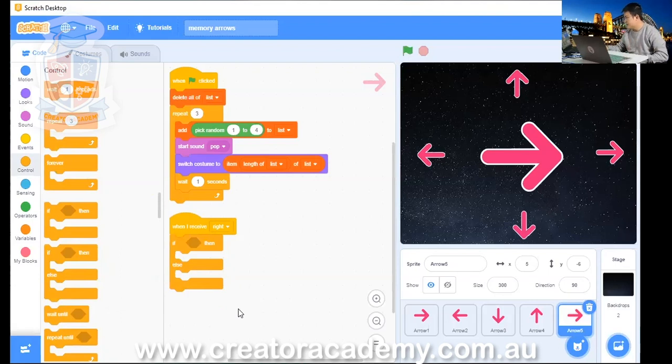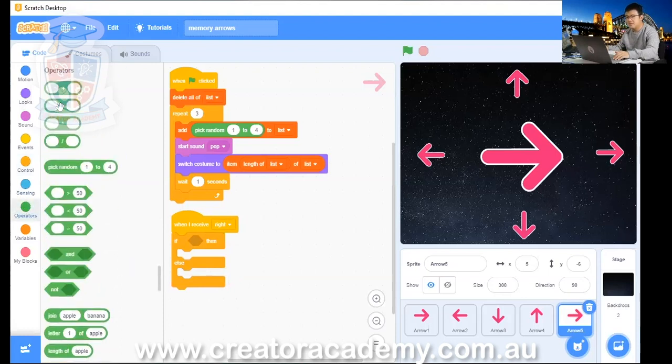When I receive Write, I want to check if that first item in the list is equal to one. In order to do that, I need to go to operators to check if something is equal to one. So I go to operators, and I go something is equal to something, this one. Something is equal to 50.